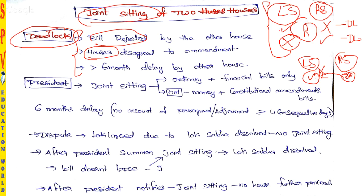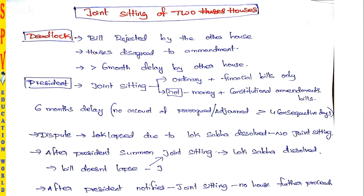Be careful here: the bill is passed in Lok Sabha and moved to Rajya Sabha; they accept the bill but say a little amendment must be made, so they return the bill to Lok Sabha. But Lok Sabha says we don't amend or take any action on the amendments suggested. This situation is also considered a deadlock.